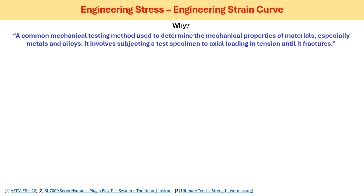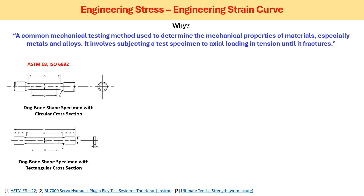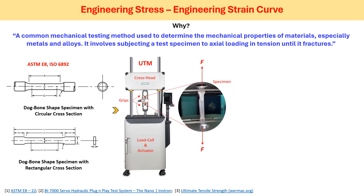Now, for this we have to expose our test specimen to axial loading under tension and study its behavior until its fracture. There are some certain guidelines to fabricate the test specimen, which is of dog bone shape, having two different kinds of cross section — the circular cross section or the rectangular cross section.